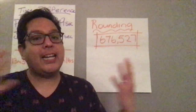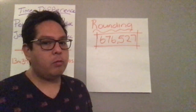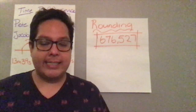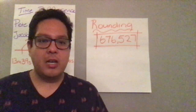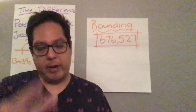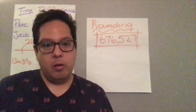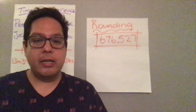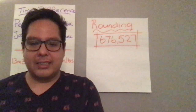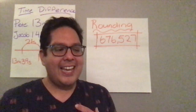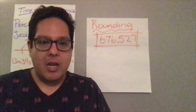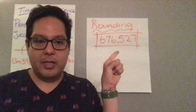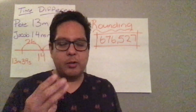The second most missed problem was the one on rounding. You were asked to round the number 676,527 in three different ways. The reason we round is because we're looking for a reasonable estimate — and an estimate is an educated guess. So we're going to round this number three different ways.